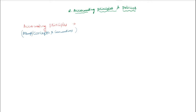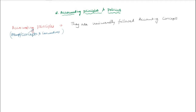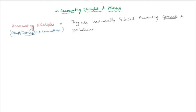Principles are universally followed accounting concepts and procedures. Now for policies — they are methods to be followed and adopted under an accounting principle.